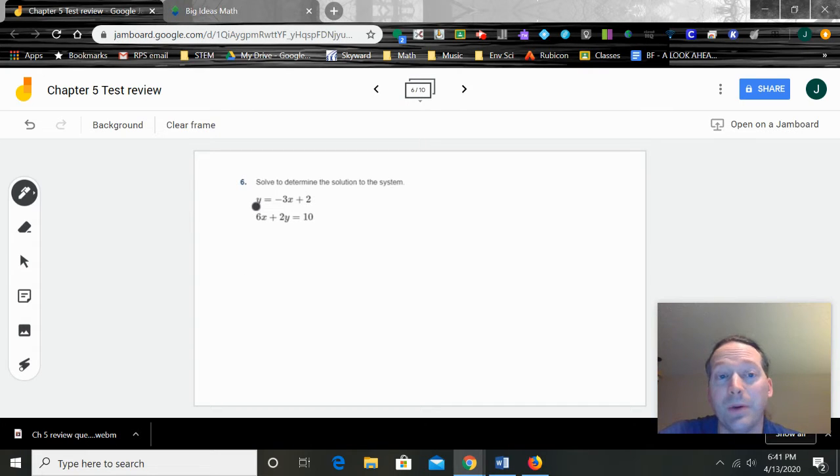This one's probably a little bit easier to do with substitution because it tells you what y is. So we're just going to plug in what y happens to be. So we get 6x plus 2 times y, which is 3x plus 2. And that whole thing is going to equal 10. So now we distribute our 2 through. 6x minus 6x plus 4 equals 10. Now we combine our like terms, and we're left with 4 equals 10. Obviously 4 can never equal 10, so this one again is no solution.